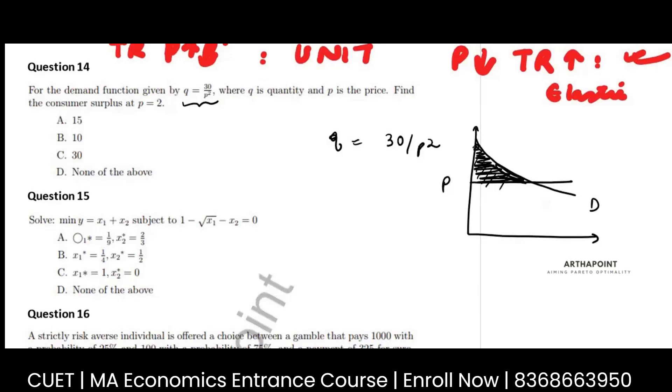Now it says that P is given as 2. So if I put P as 2, what will be my quantity? It will be 30 by 2 square. This will be 30 divided by 4, so this will be 7.5.